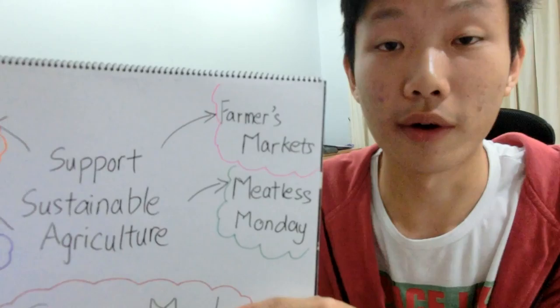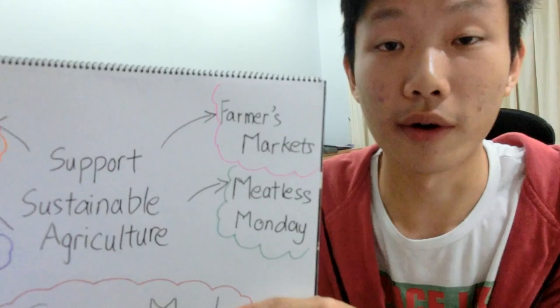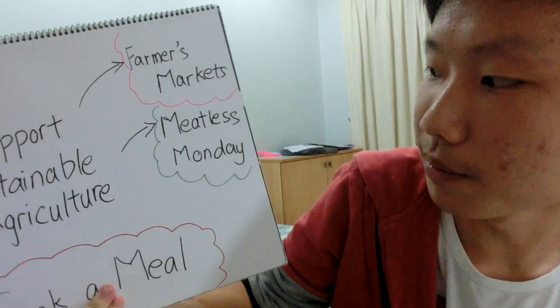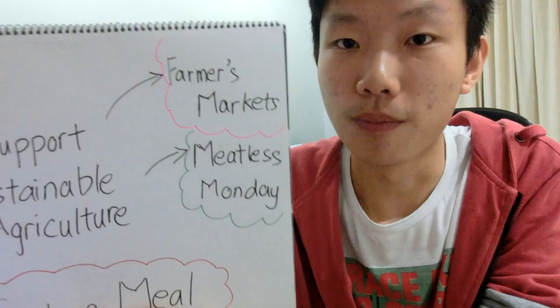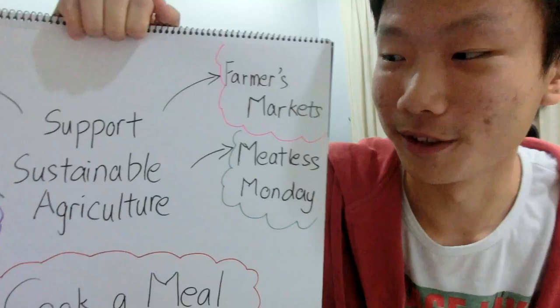The second way is Meatless Monday. Because meat is now considered one of the biggest pollutants in agriculture, by eating less meat, the killing of animals will be reduced and pollution will also be reduced at the same time.